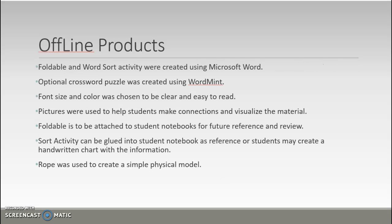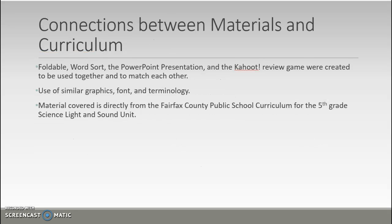Offline products: The foldable and word sort were created using Microsoft Word. The optional crossword puzzle was created using a website called WordMit. Font size and color were chosen for clarity and readability, and pictures were used to help students visualize the material. The foldable can be attached to student notebooks for future reference, and the sort activity can be glued in or recreated as a handwritten chart. A rope was used to create a physical model of a transverse wave. All materials — the foldable, word sort, PowerPoint, and Kahoot game — were created to match each other using consistent graphics, font, and terminology, taken directly from the Fairfax County Public Schools 5th grade light and sound curriculum.